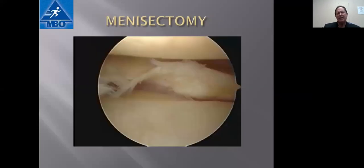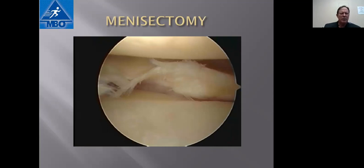If somebody has a meniscus tear and also has arthritis, generally an arthroscopic removal of the meniscus won't help and may actually hurt. However, if somebody has some arthritis but has an acute meniscal tear superimposed on that, and their symptoms are localized right to that area, or if they're having mechanical symptoms where the knee is blocking or giving way, there are still times when smoothing out the meniscus will relieve symptoms and preclude them from needing a bigger operation.